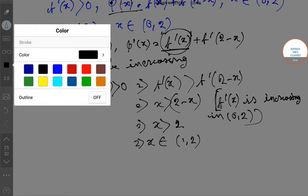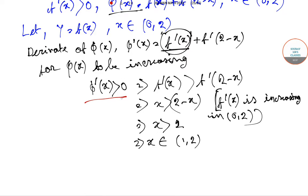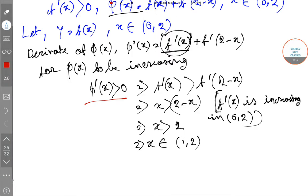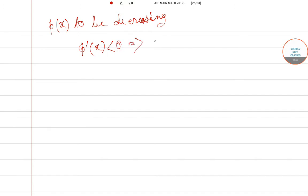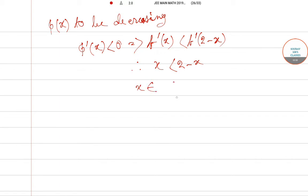For φ(x) to be increasing, φ'(x) > 0 means f'(x) > f'(2 - x), which means x > 2 - x, so x > 1, giving x ∈ (1, 2). For φ(x) to be decreasing, φ'(x) < 0, so f'(x) < f'(2 - x), meaning x < 2 - x, so x belongs to (0, 1).